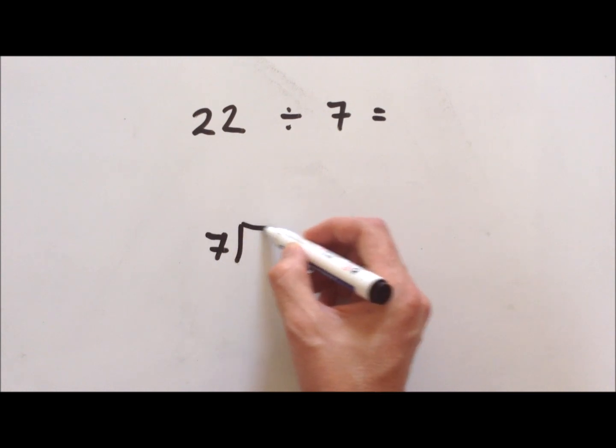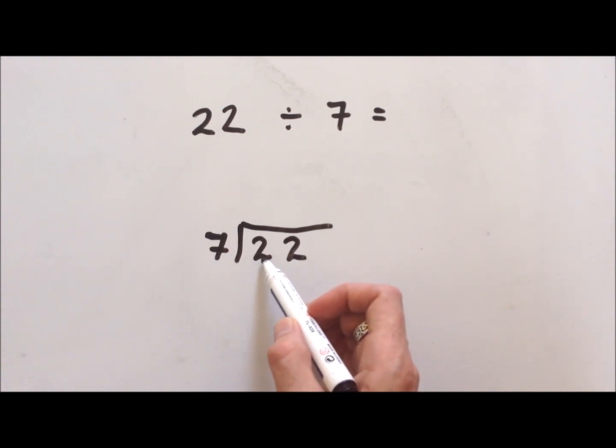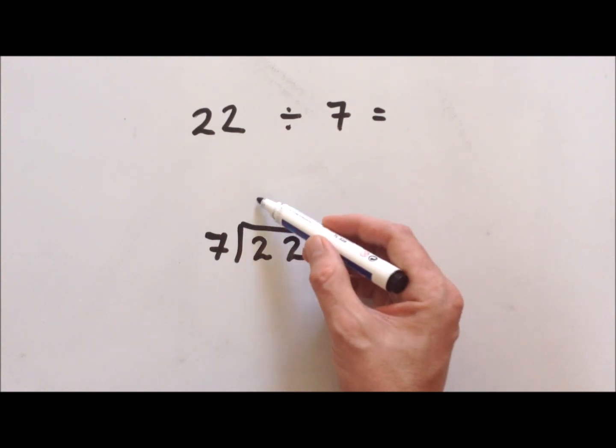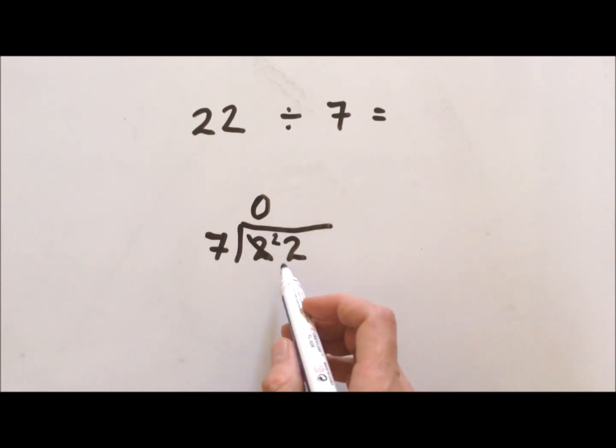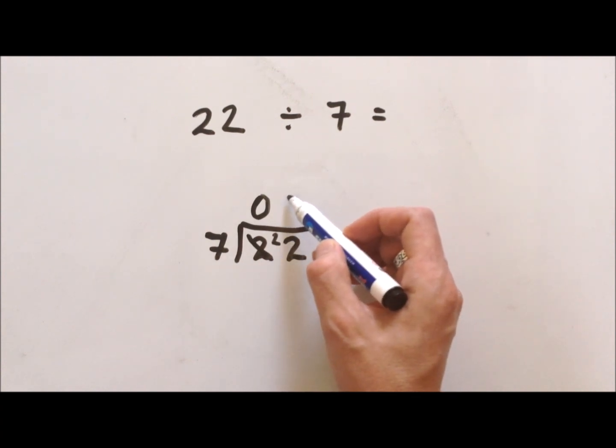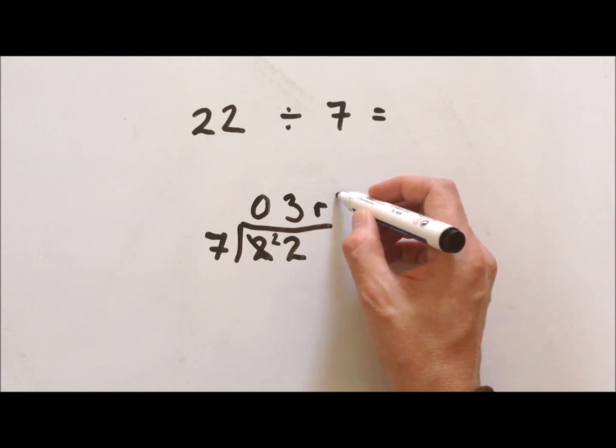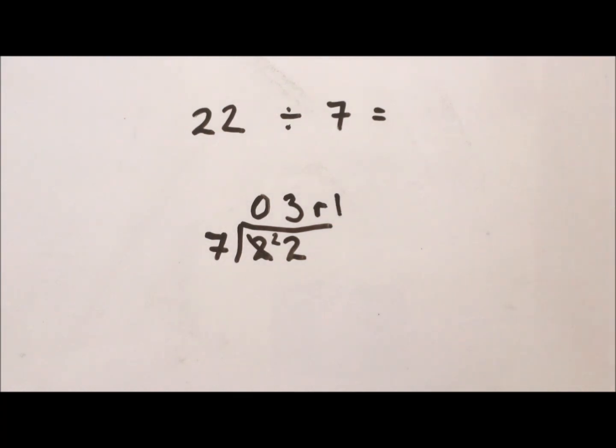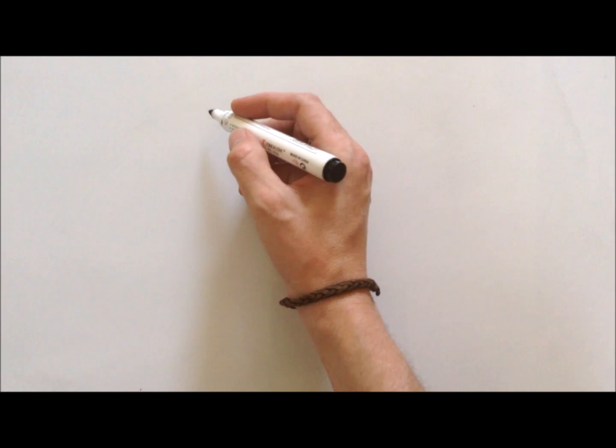How many sevens can you get out of 2? You can't get 7 from 2, so that's none. We cross this out and move it across. How many sevens can you get from 22? Well, 1 times 7 is 7, 2 times 7 is 14, 3 times 7 is 21, so it's 3, and we've got a remainder of 1.